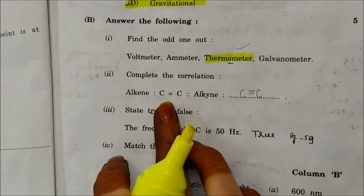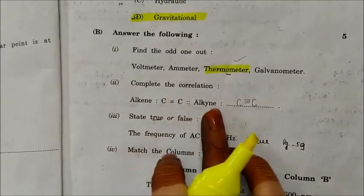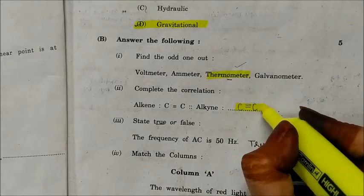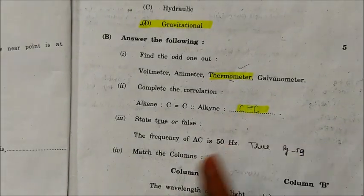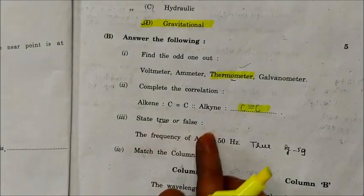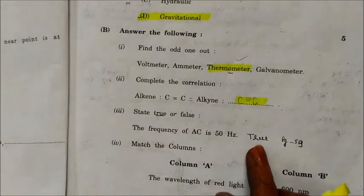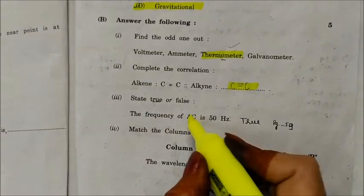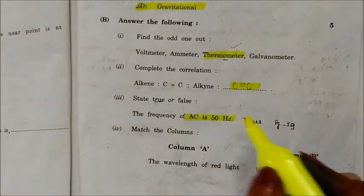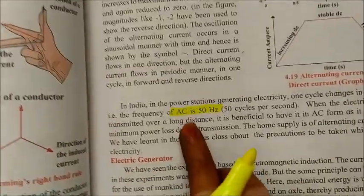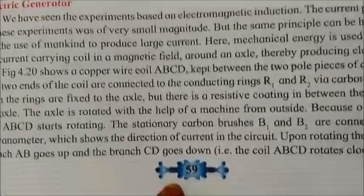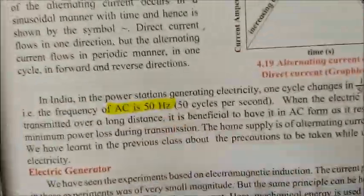Complete the correlation: alkyne has C triple bond C. For the AC frequency question, the answer is 50 Hz — this has been taken from your textbook page number 55.